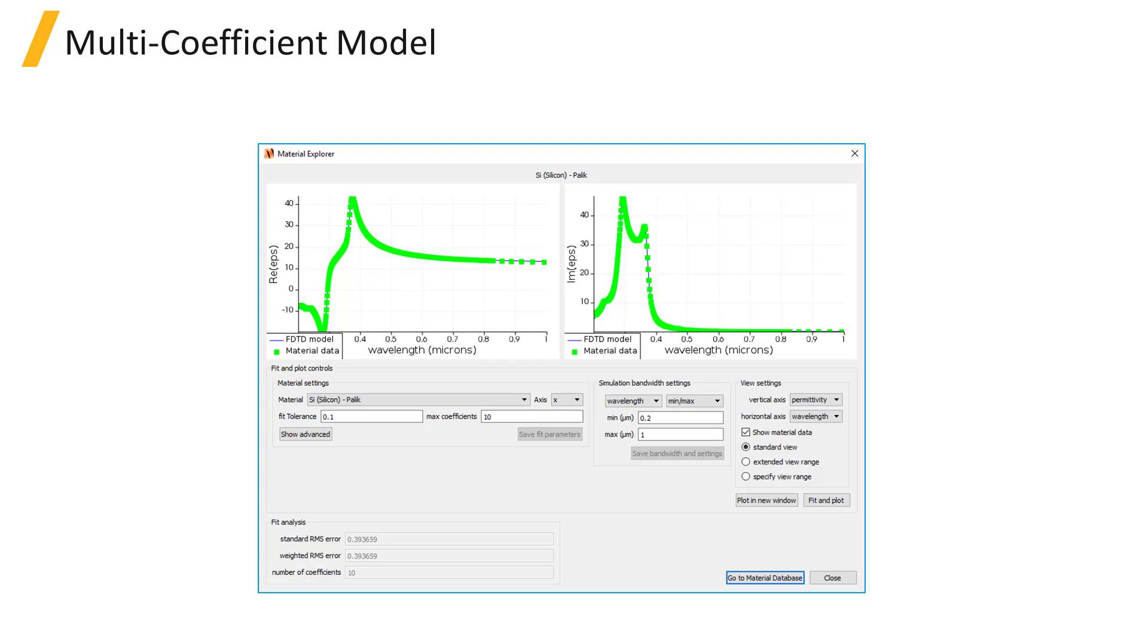The multi-coefficient model is able to generate good fits for a broad range of dispersive materials like the ones shown here. And the material fits to data often better represent the real material properties compared to using simpler materials like the Drude model, also known as the plasma model, for metals.